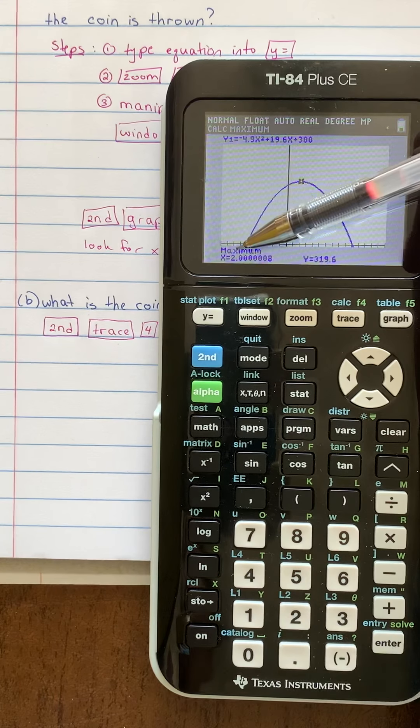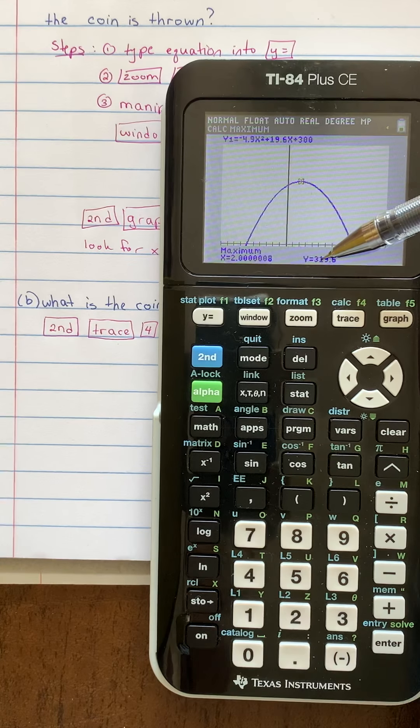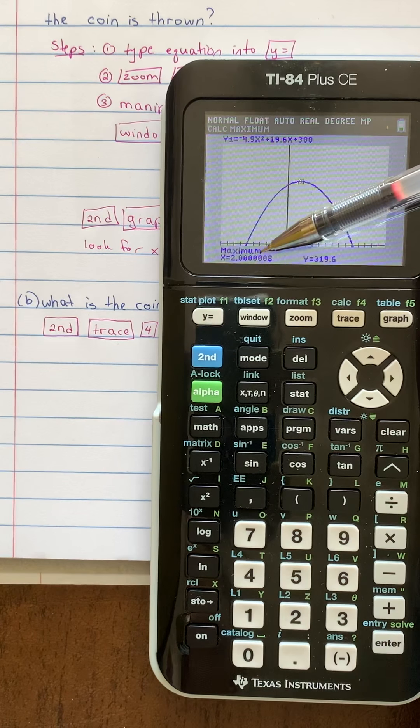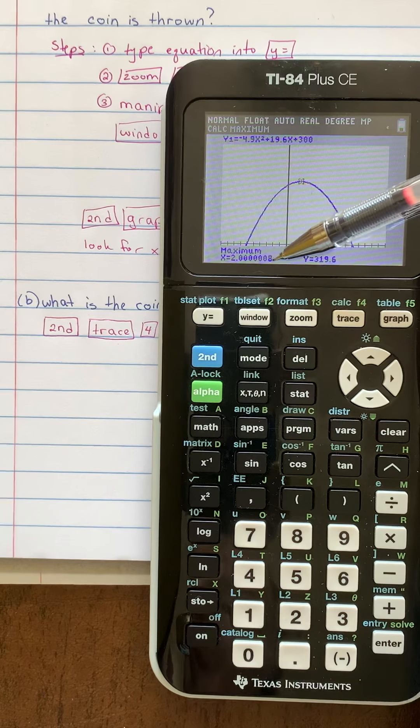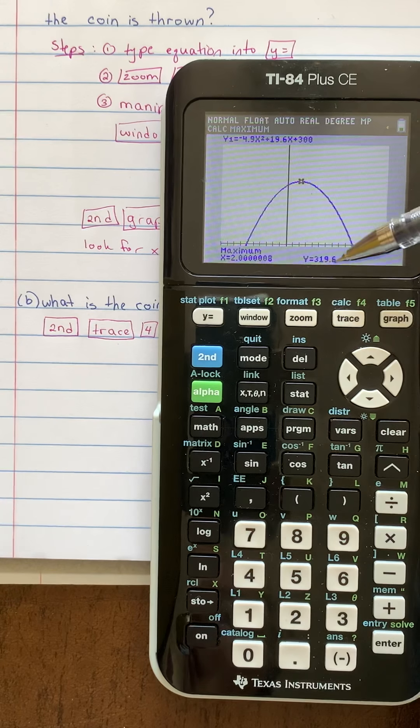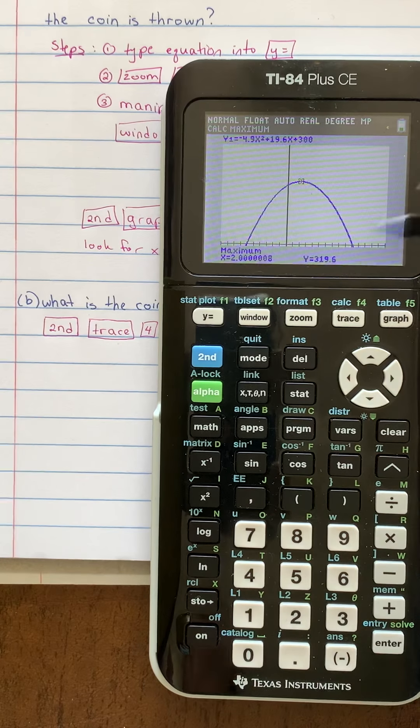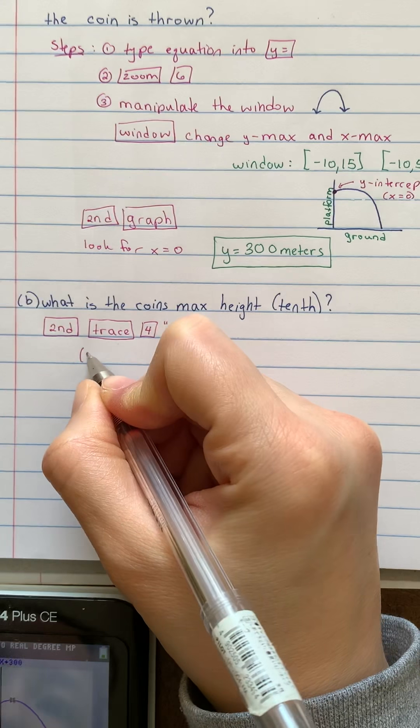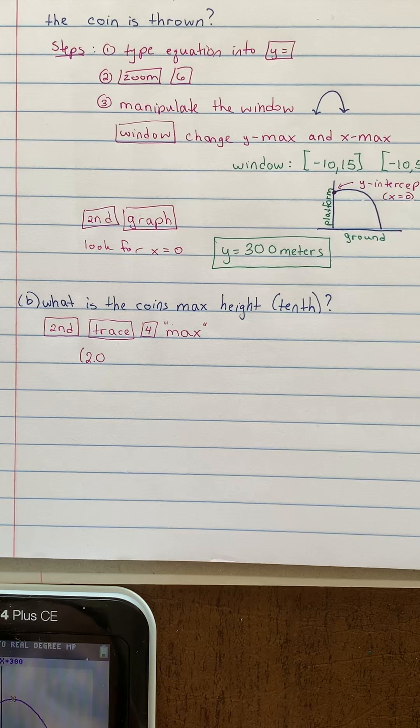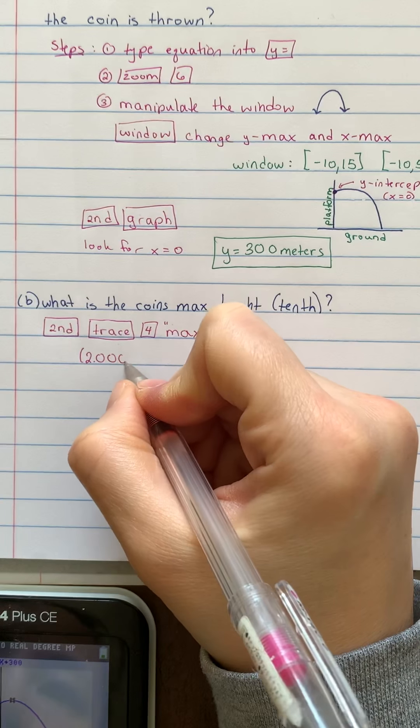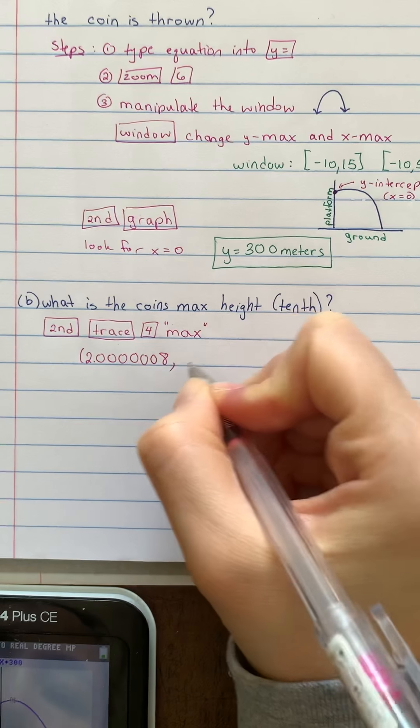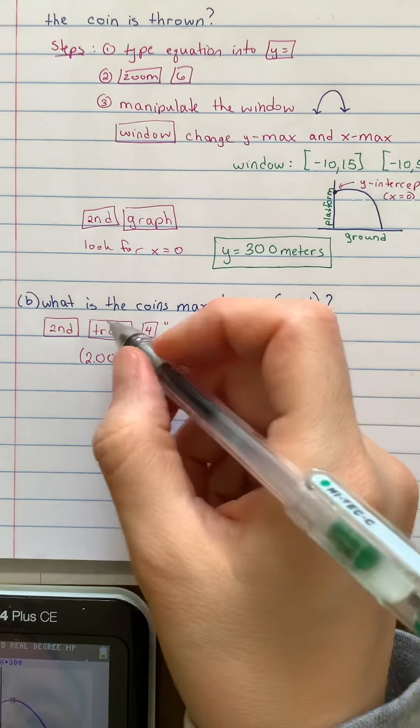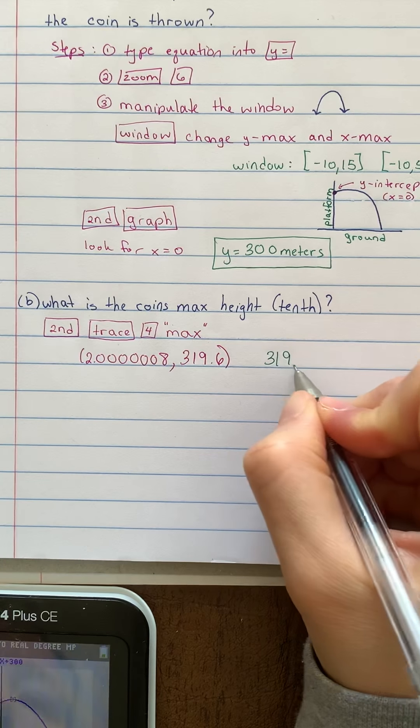Now my calculator says it's 2.0000008 and 319.6. Yours might say exactly 2.0000009 at the end or a 7 at the end. This part might be a little different than mine, but the y value should match for sure. All right, so I'm going to copy that value down. So the maximum is for my calculator, two point, I've got one, two, three, four, five, six zeros. Followed by an eight. And then 319.6. And then to answer this particular question, it says, what is the coin's maximum height? So it's 319.6 meters.